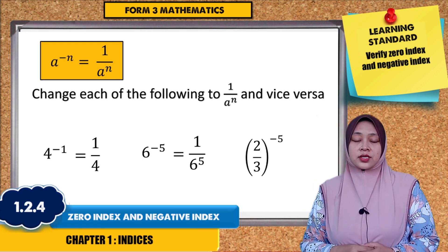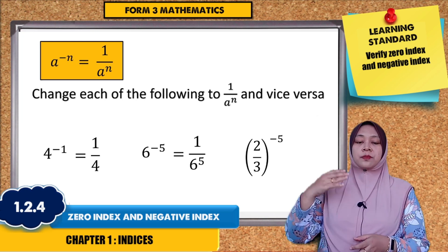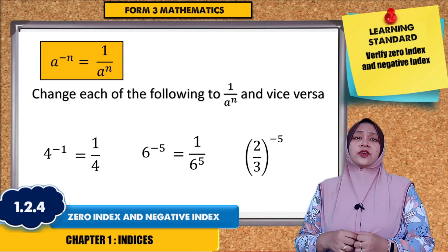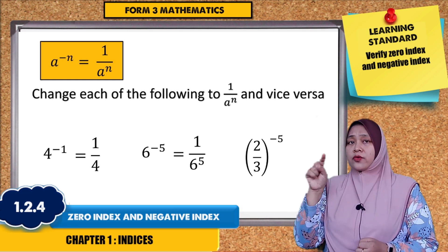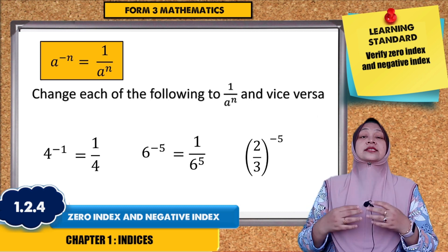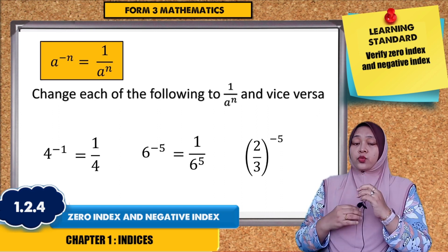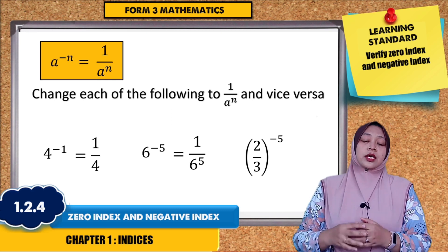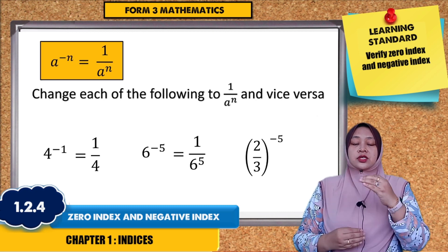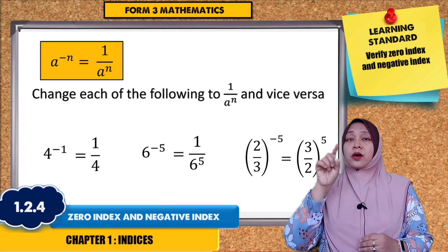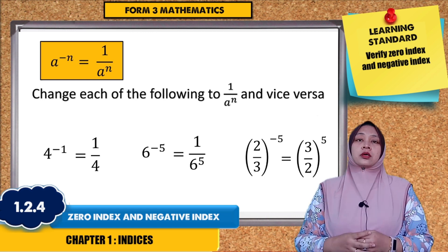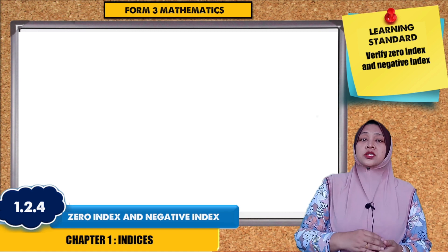If you have 2 over 3 to the power of negative 5, as I said before, if there is a negative in the index you must put 1 over. But here the question is in fraction form. So easily: if you want to change the form, you just switch the numerator and denominator. The answer is 3 over 2 to the power of 5 — no negative.